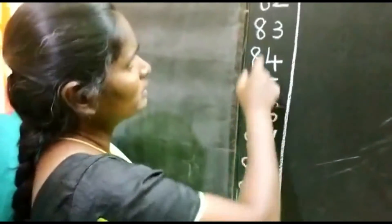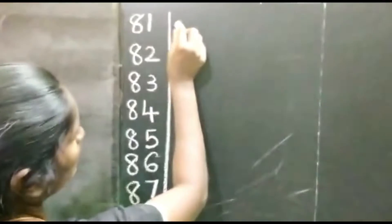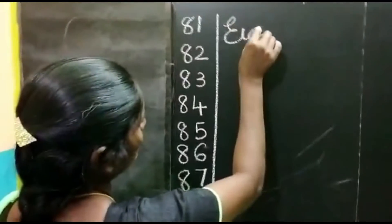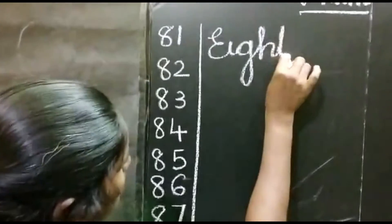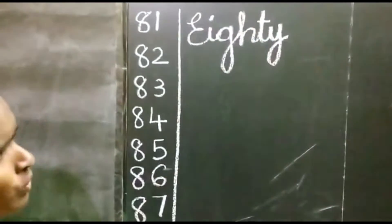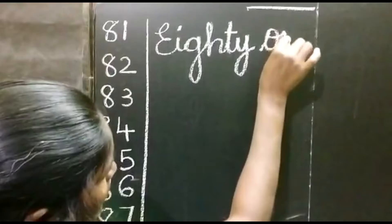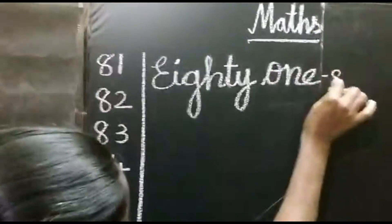Now you have learned the numbers. Now I am going to teach number names. What is the spelling for 80? E-I-G-H-T-Y. And for 1? O-N-E. So 81 is EIGHTY ONE.